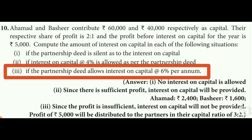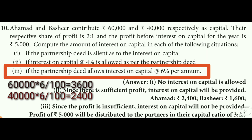Situation three: if the partnership deed allows interest on capital at 6% per annum. Agamath with capital 60,000 at 6% gets 3,600. Bajir with capital 40,000 at 6% gets 2,400. Total interest on capital is 3,600 plus 2,400 equals 6,000.